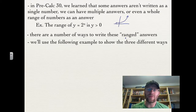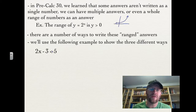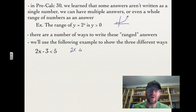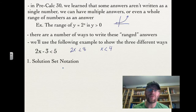There are a number of ways to write these ranged answers. We'll use the following example to show three different ways. Our first example is 2x minus 3 is less than 5. Solving that, we add 3 to both sides to get 2x is less than 8, and our final answer is x is less than 4.